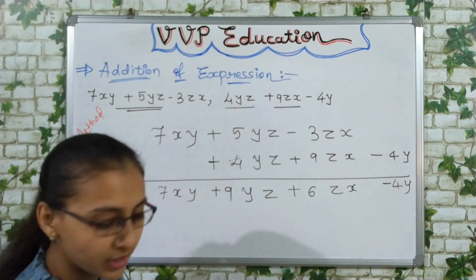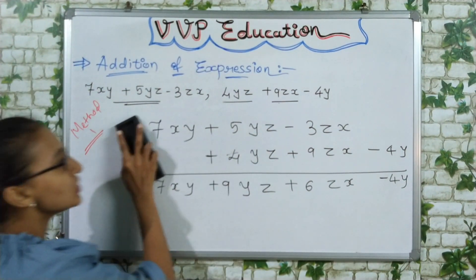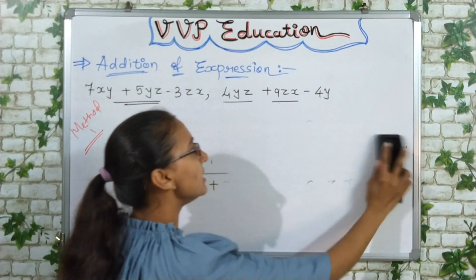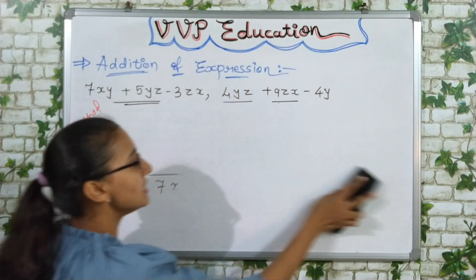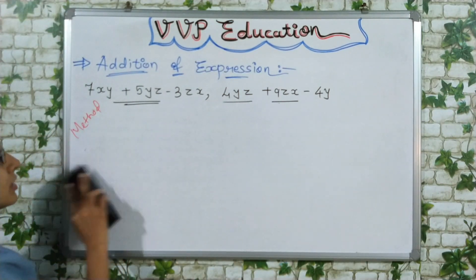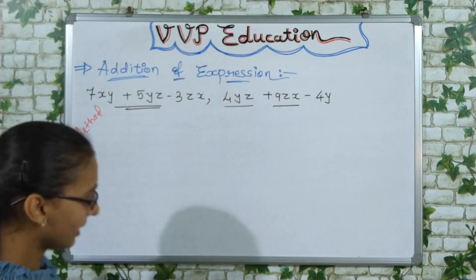So that was our first method, in which we arrange the like terms of the second expression below the like terms of the first expression and then add them.